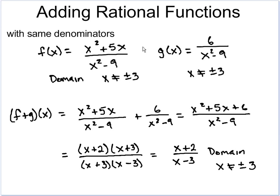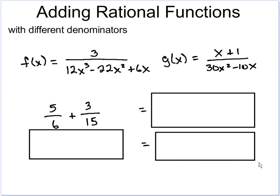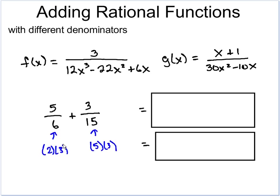That's how we add rational functions with the same denominator. Now let's look at what happens when we have different denominators. We've got two problems that look really complex, but we'll take it step by step. The first thing to consider is: how do we add fractions with different denominators? We need to get the same denominator by factoring those denominators apart.